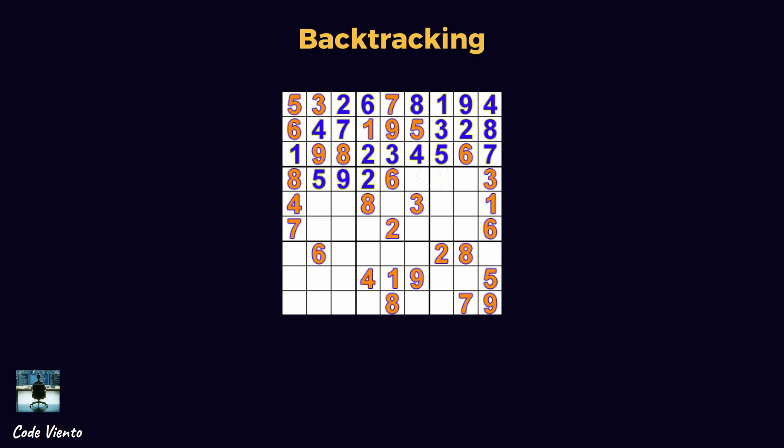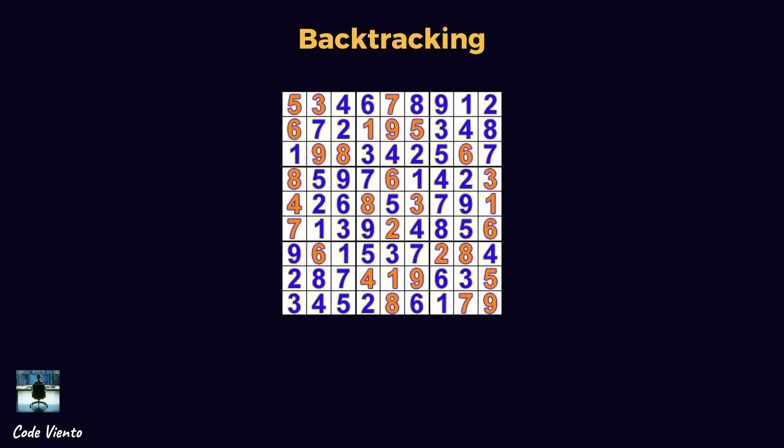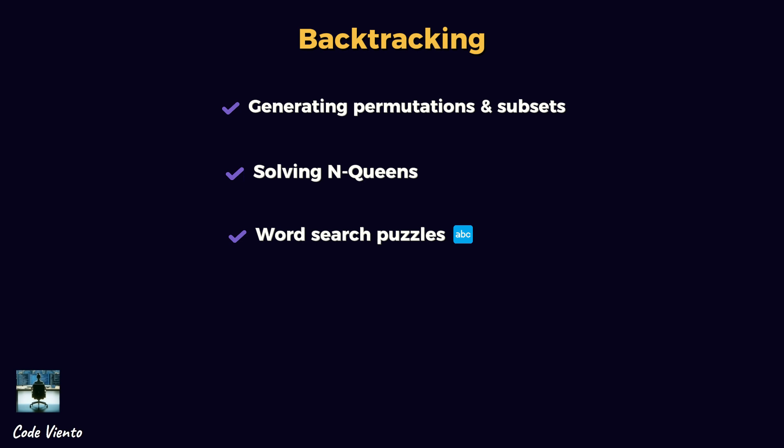Example: solving a Sudoku puzzle. Pick an empty cell and try placing a number. Check if the number follows Sudoku rules. If valid, move to the next empty cell. If no number works, backtrack to the previous step and try a different number. Other real-life uses of backtracking include generating permutations and subsets, solving N-Queens, and word search puzzles.